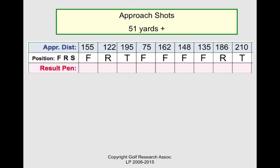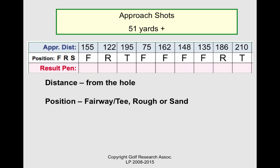Approach shots. This is your attempt to hit a green from 51 yards or greater. First, record the distance to the hole — not the distance you think the shot will play due to slope or wind, but the actual yardage. All the other factors will even out over time. Also, the website and the app use 25-yard ranges, the same range used by the PGA Tour analysis, so you need not struggle with the exact numbers. Next, record the position of your approach attempt: either the fairway, tee, rough, or sand. Both the app and the website will prompt the most logical position based upon the result of your drive. Finally, indicate those instances when your approach shot resulted in a penalty.